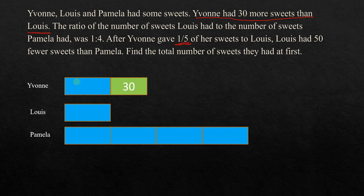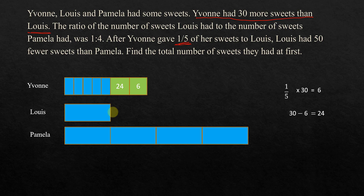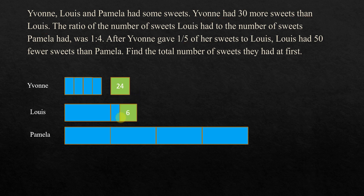We have to take note: we have an unknown portion and a known portion. When we apply one-fifth, we apply them separately — once for the unknown part and then for the known part. We divide the unknown part into five parts and one part will be given to Louis. The 30 is a known part, so one-fifth of 30 is 6, and 30 minus 6 is 24. We divide this into 24 and 6, since 6 goes to Louis along with one unit from the unknown part. There were five units, and each of the four sections also equals five units — so totally 20 units.